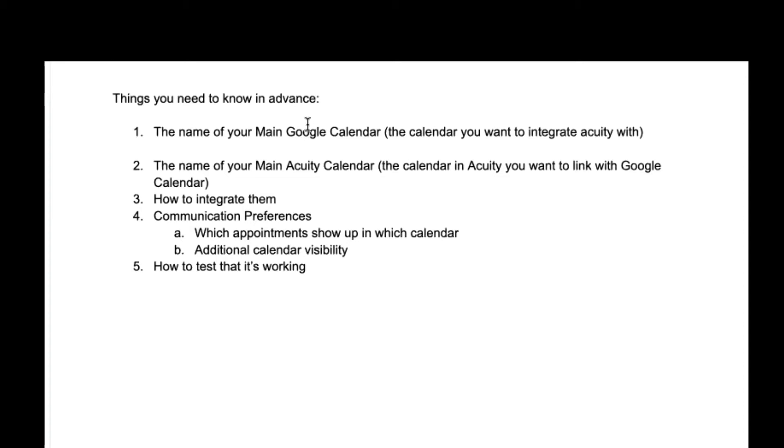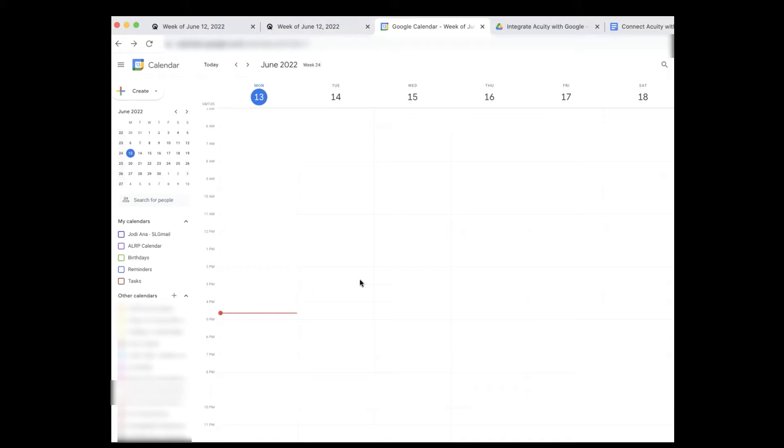Let's start with finding the name of your main Google calendar — the Google calendar that you want to talk to Acuity. If you go to your Google calendar, you're going to see something similar to this. Over on the left-hand side, you'll see a bunch of different names. These names are different calendars available in my Google calendar. Right now it looks pretty blank because I don't have these calendars selected.